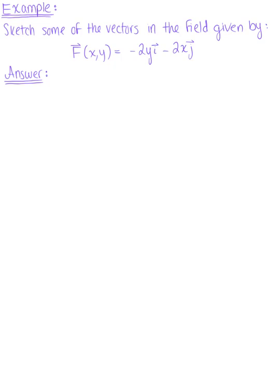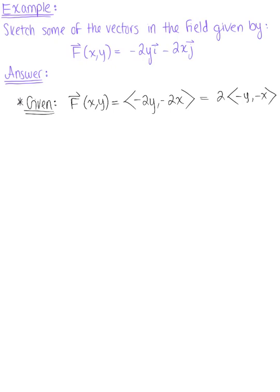Sketch some vectors in the vector field given by capital vector F. I'm going to rewrite our given vector field in its component form: capital vector F of x, y defined by the components minus 2y, minus 2x. For simplicity, I'm going to factor out that scalar 2, leaving the negatives on the inside because I want to find vectors of equal length in this field and classify the corresponding level curve, so we know we're going to find that magnitude.